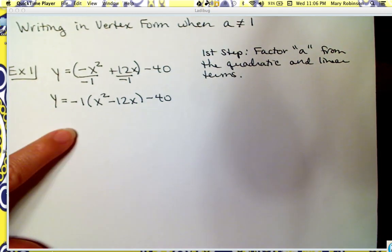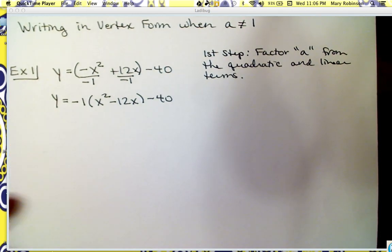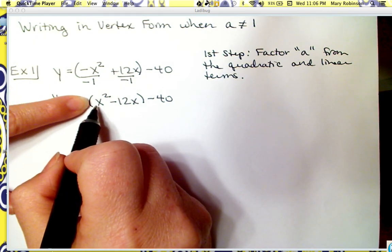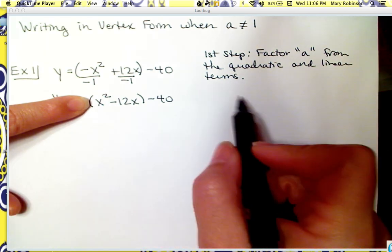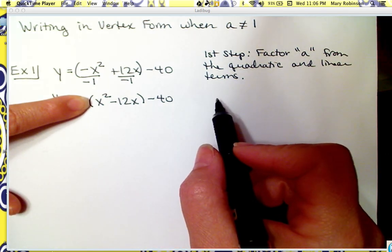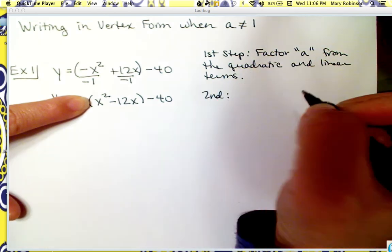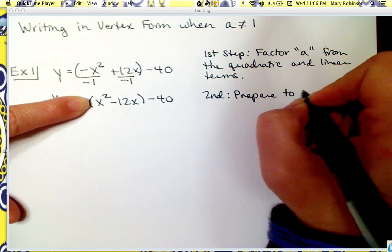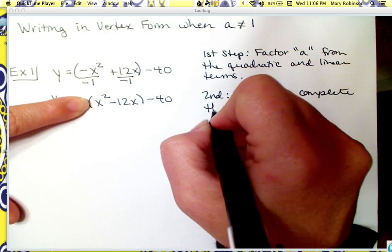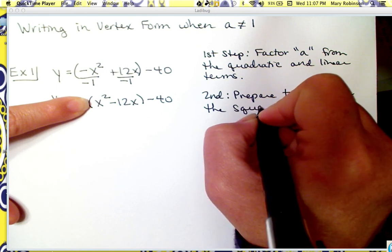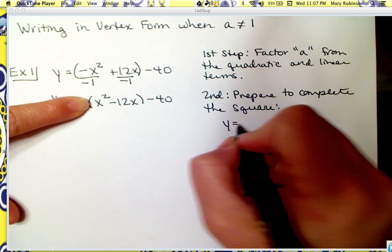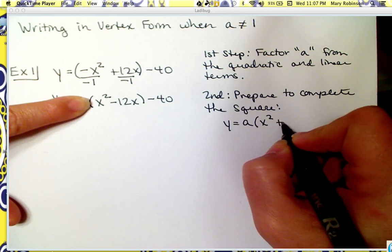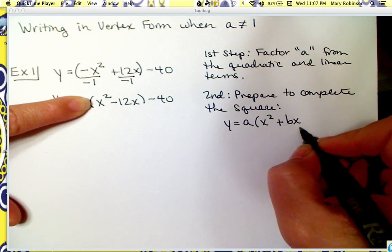We factor out that a value, and now we're basically left with what we had before — a positive 1 as the coefficient of x squared. So our second step is to pick up exactly where we left off, which means we prepare to complete the square. What that means is: y equals whatever the a value is, times x squared plus bx.